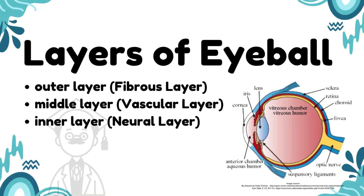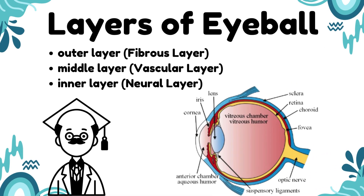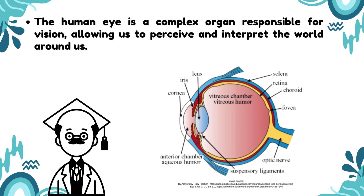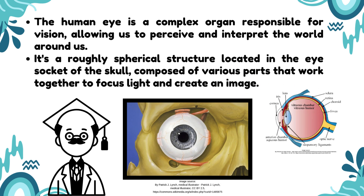Layers of the Eyeball. Today, we're diving into the anatomy of the human eye, specifically the layers of the eyeball. The human eye is a complex organ responsible for vision, allowing us to perceive and interpret the world around us. It's a roughly spherical structure located in the eye socket of the skull, composed of various parts that work together to focus light and create an image.